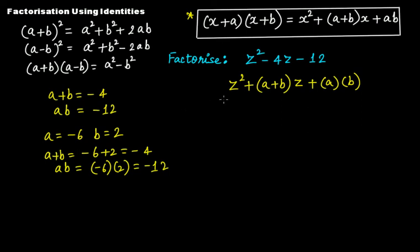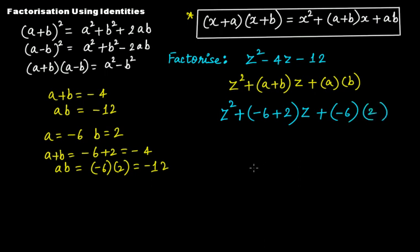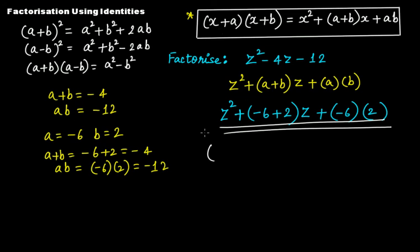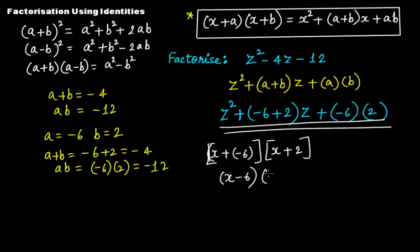Our problem is solved. We write z squared plus (minus 6 + 2)z plus (minus 6 multiplied by 2). Relating to the identity where a is minus 6 and b is 2, we get (z − 6)(z + 2). So this is the factorization of z squared minus 4z minus 12.